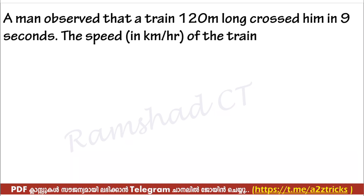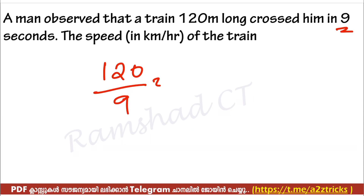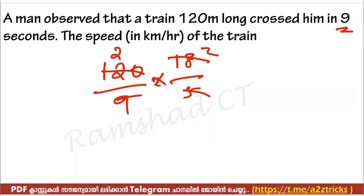A man observed that a train 120 meters long crosses him in 9 seconds. Find the speed in km per hour of the train. Working through the calculation, the speed comes to approximately 48 km per hour.